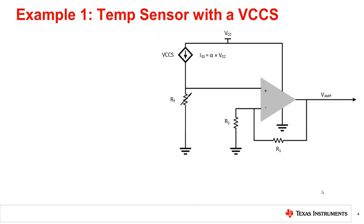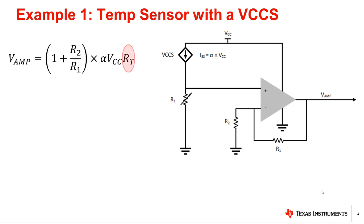As already seen in the previous circuit, the relationship between supply and the output is linear and directly proportional. At the same time, our signal of interest is RT and not VCC, so one can simply use the ratiometric measurement approach to cancel out the dependency of the supply voltage variation on the output.